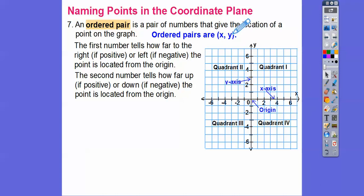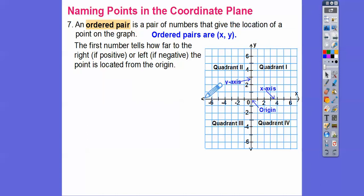When you get into higher math, it's cosine comma sine, and C comes before S. So everything's always in alphabetical order — any ordered pair is always alphabetical order. But for now, we're just going to do X, Y.